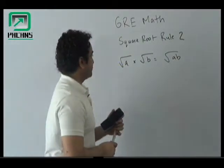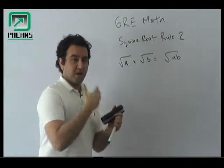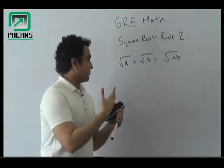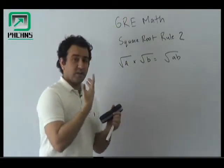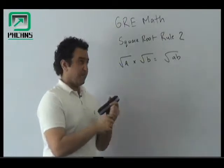Hello everyone, welcome to Pacans square root rule number two. If you have under root A times under root B, it is going to be equal to under root AB.